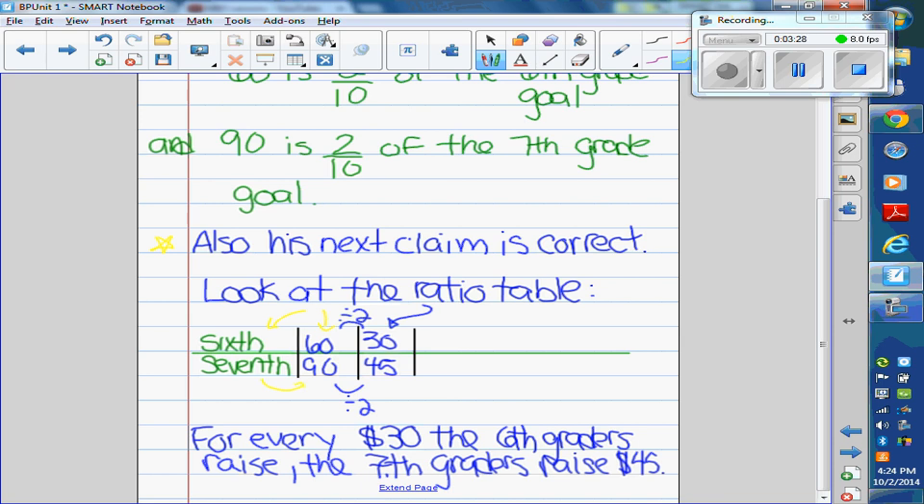You could use a ratio table to come up with all kinds of claims. The way a ratio table works is you can multiply or divide the numbers in the top and the numbers in the bottom by the same value.